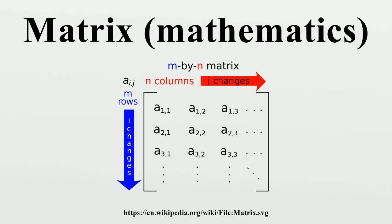Familiar properties of numbers extend to these operations of matrices. For example, addition is commutative — i.e., the matrix sum does not depend on the order of the summands: A plus B equals B plus A. The transpose is compatible with addition and scalar multiplication, as expressed by (cA)^T equals cA^T and (A plus B)^T equals A^T plus B^T. Finally, (A^T)^T equals A.